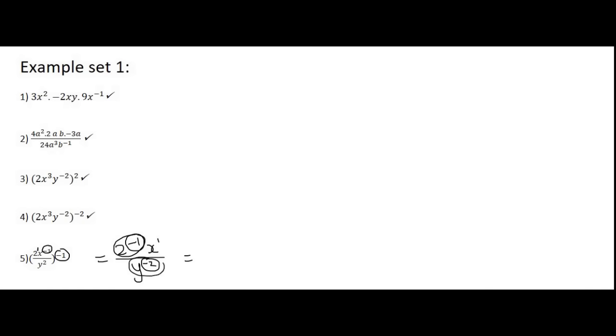And so the X that's already there will stay at the top. The Y minus 2 at the bottom will now go to the top. And the 2 to the power of minus 1 will now go to the bottom as 2 to the power of 1. And that will be the final answer.